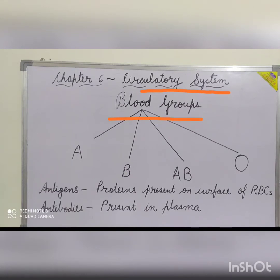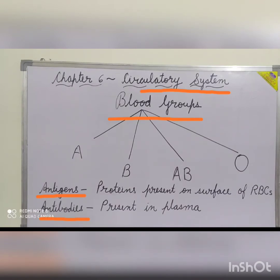On the basis of absence and presence of proteins called antigens and antibodies on the surface of the red blood cells, the human blood is divided into four groups: A, B, AB and O.